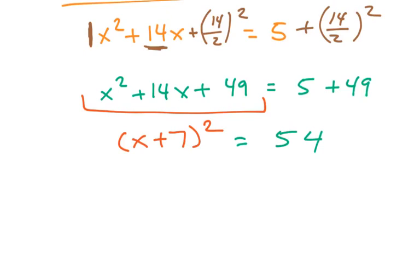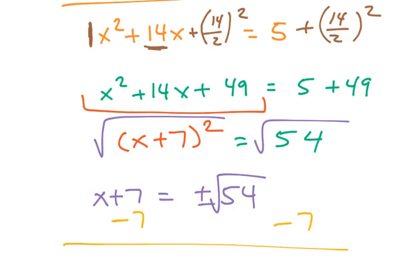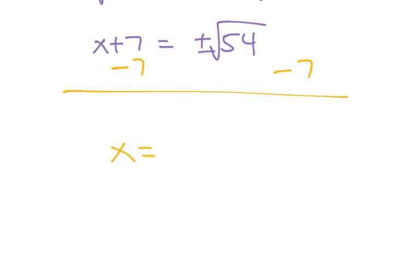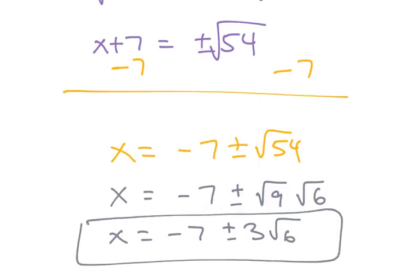From here, we just use the square root property to finish it off. So you take the square root of both sides. So x plus seven equals plus or minus the square root of 54. And from here we subtract seven. So we get x equals negative seven plus or minus square root of 54. We're probably going to ask you to simplify the square root. We know nine times six is 54. The square root of nine is three. So this is negative seven plus or minus three square root of six. And these are your answers.